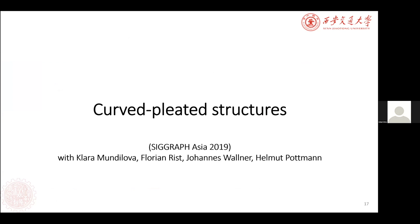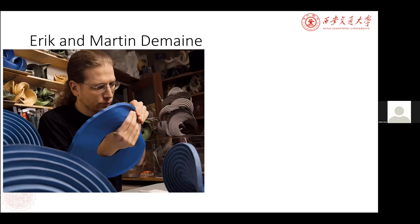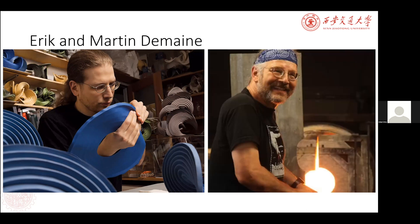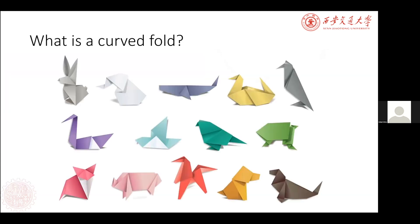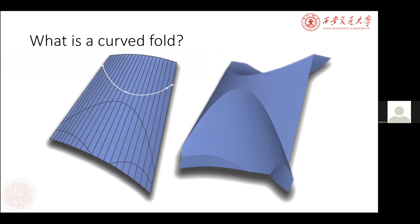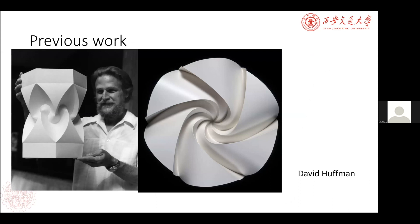Next I will introduce curved pleated structures. I consider it as an origami-related and also a developable-surface-related work. Our work was motivated by discrete differential geometry and inspired by curved folding art such as work by Erika Daman and his father Martin Daman. The curved pleated structure is a kind of origami with zigzag curved folds. In traditional origami design, paper is usually folded around straight edges without stretching, tearing, or cutting. However, a flat sheet of material can also be folded around curved creases, and the folded surface can be isometrically mapped onto a 2D domain.